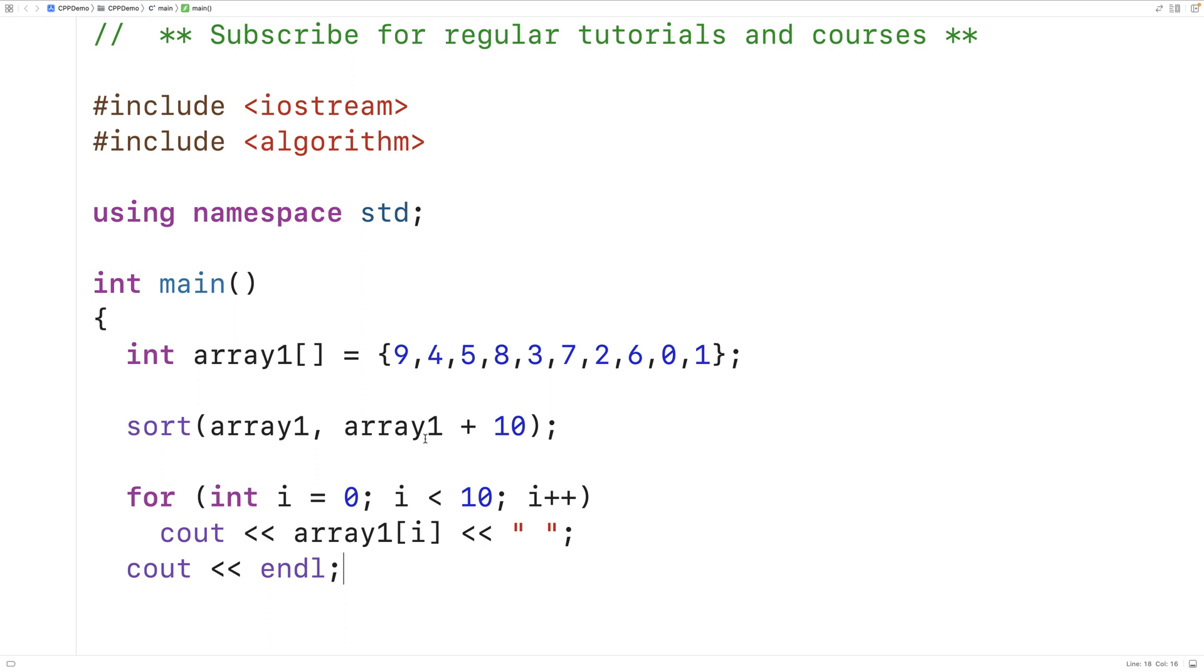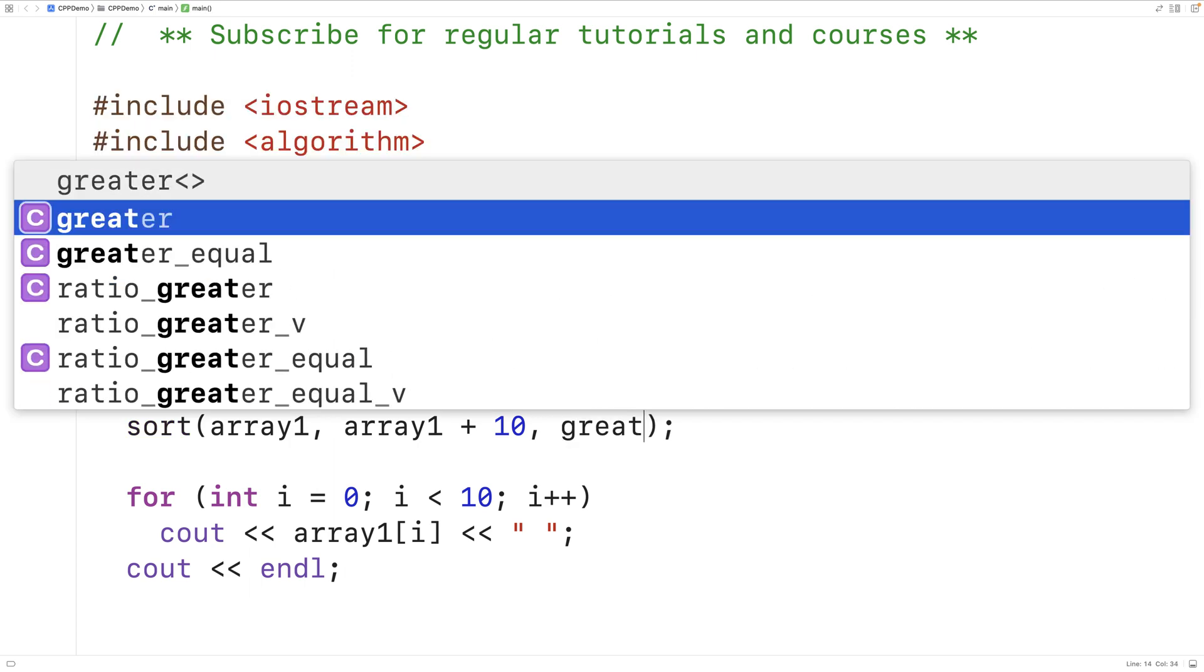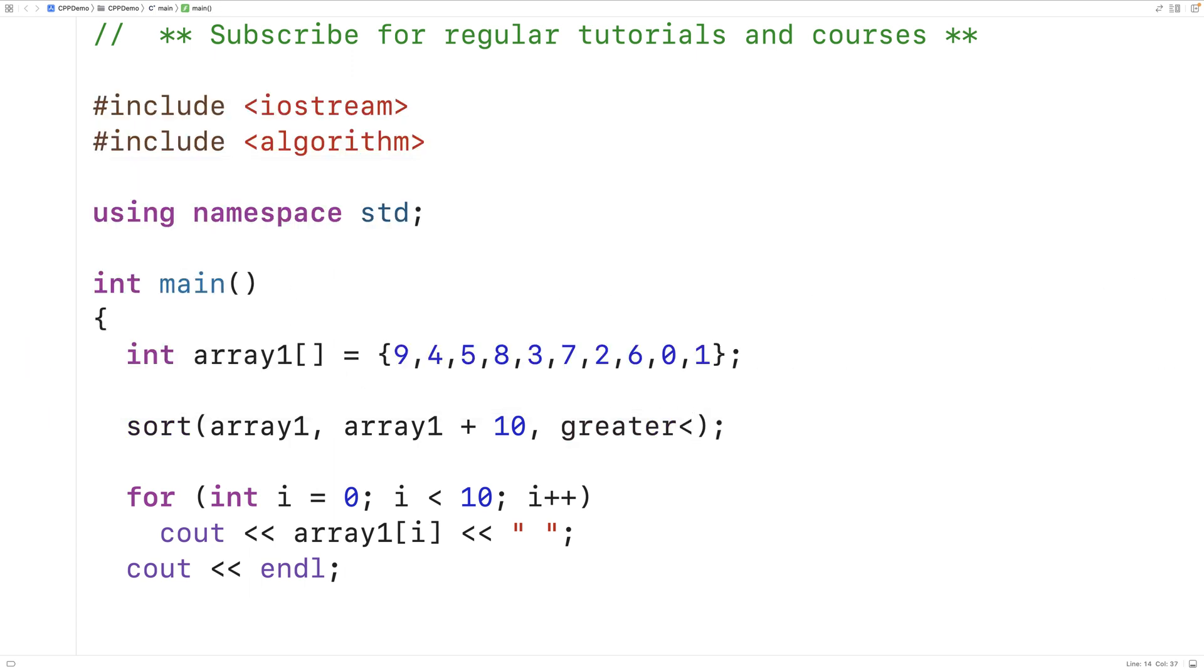Now the sort function does accept a third argument. And the third argument specifies how we want to compare the different elements in whatever we're sorting. In this case, an array. So what we could do is supply this third argument here. And what I'll do is say greater open bracket int close bracket and then open and close bracket here. And what I'm basically doing here is passing in the greater operator. And I'm saying that I want to use this to compare elements.